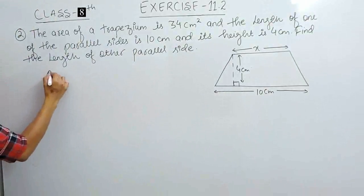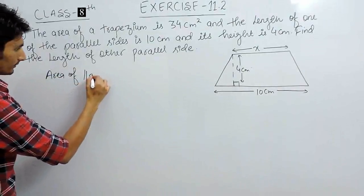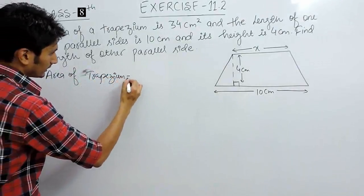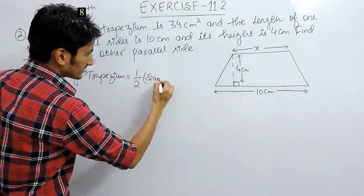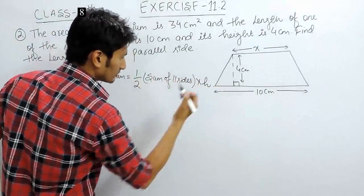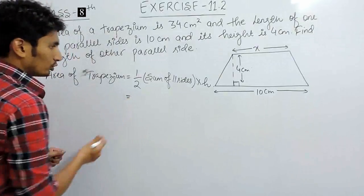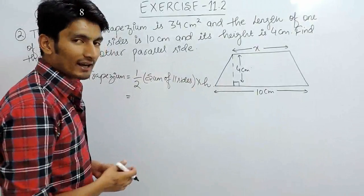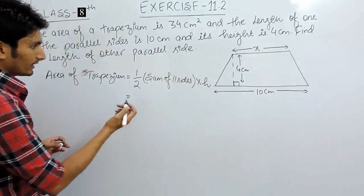We know that the formula for the area of a trapezium is equal to half the sum of the parallel sides, multiplied by the height, which is the shortest distance between the two parallel lines. To understand how this formula is derived, you can see our videos on the fundamentals, where we have explained why the formula is this.